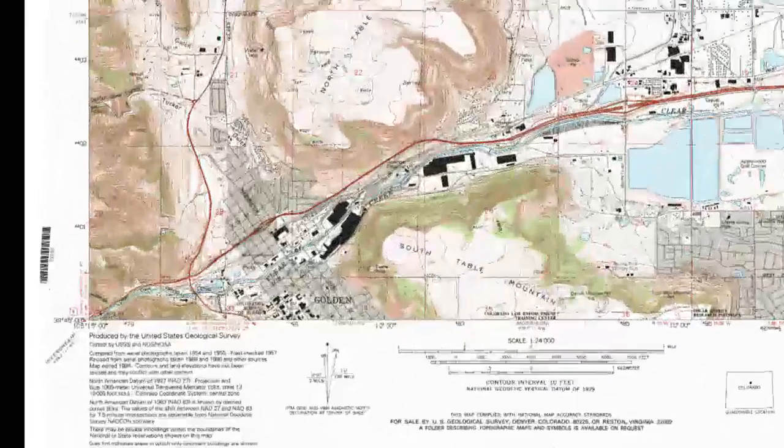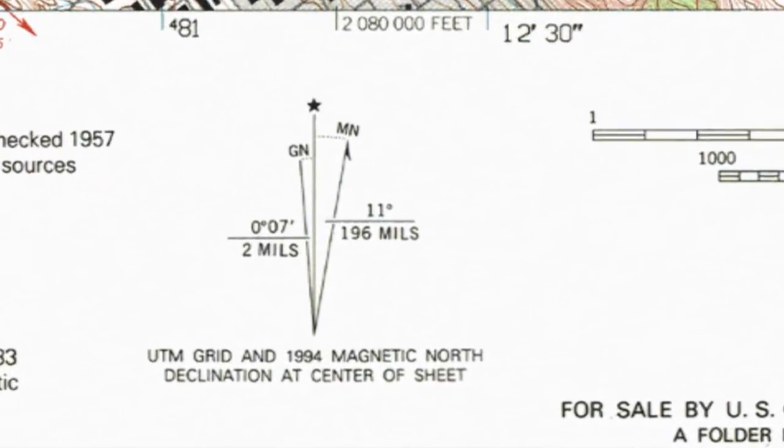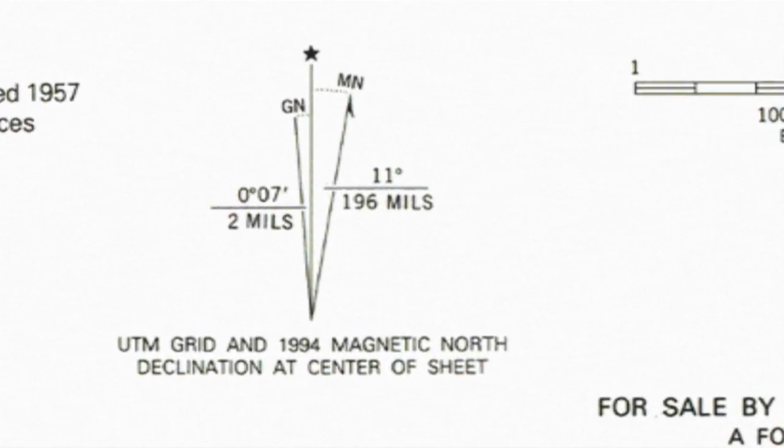Turn your attention to the bottom of your map, to the left of the scale information. Here we see three lines at angles to each other. The left line is labeled GN, which stands for grid north.